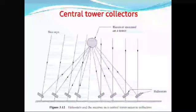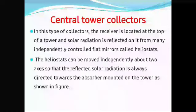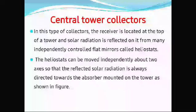The last type is the central tower collector. In this type, the receiver is located at the top of a tower and solar radiation is reflected onto it from many independently controlled flat mirrors called heliostats. The heliostats can be moved independently about two axes so that the reflected solar radiation is always directed towards the absorber mounted on the tower, as shown in the figure.